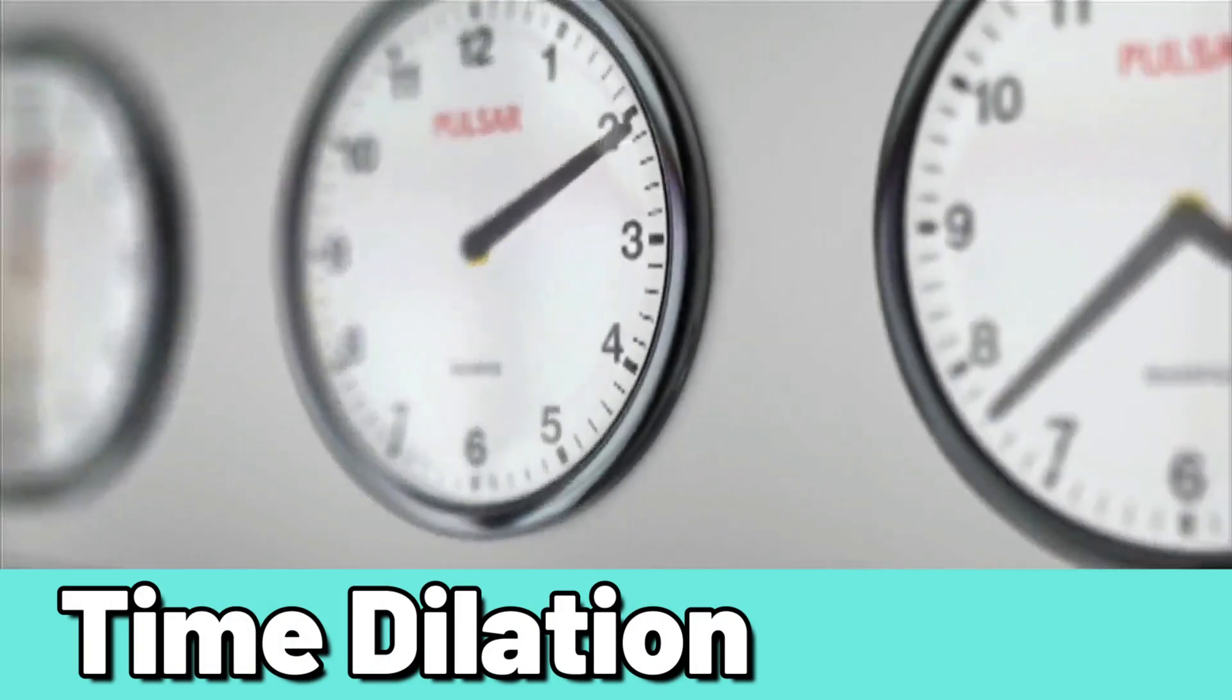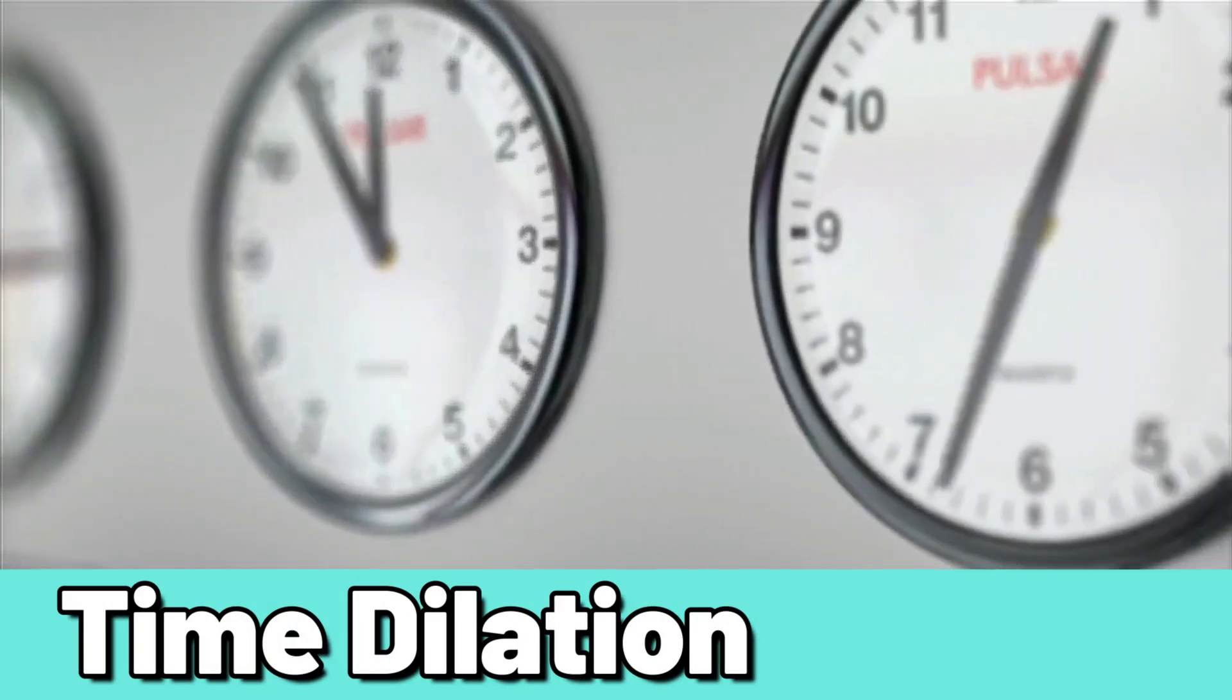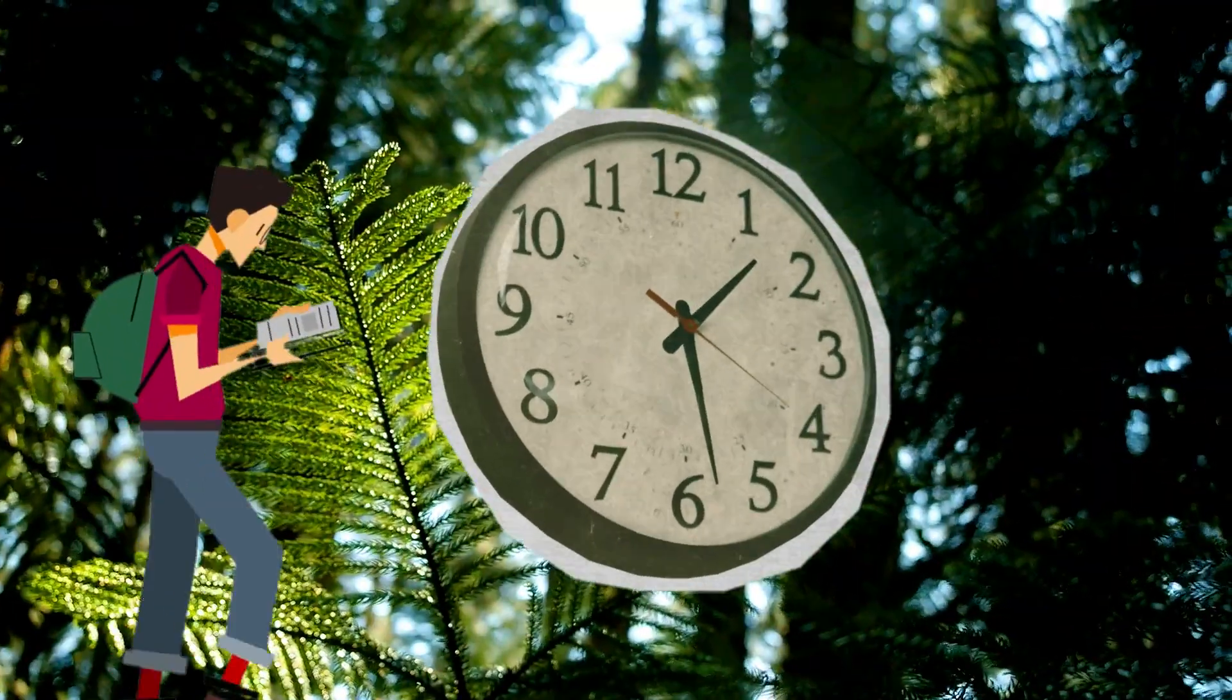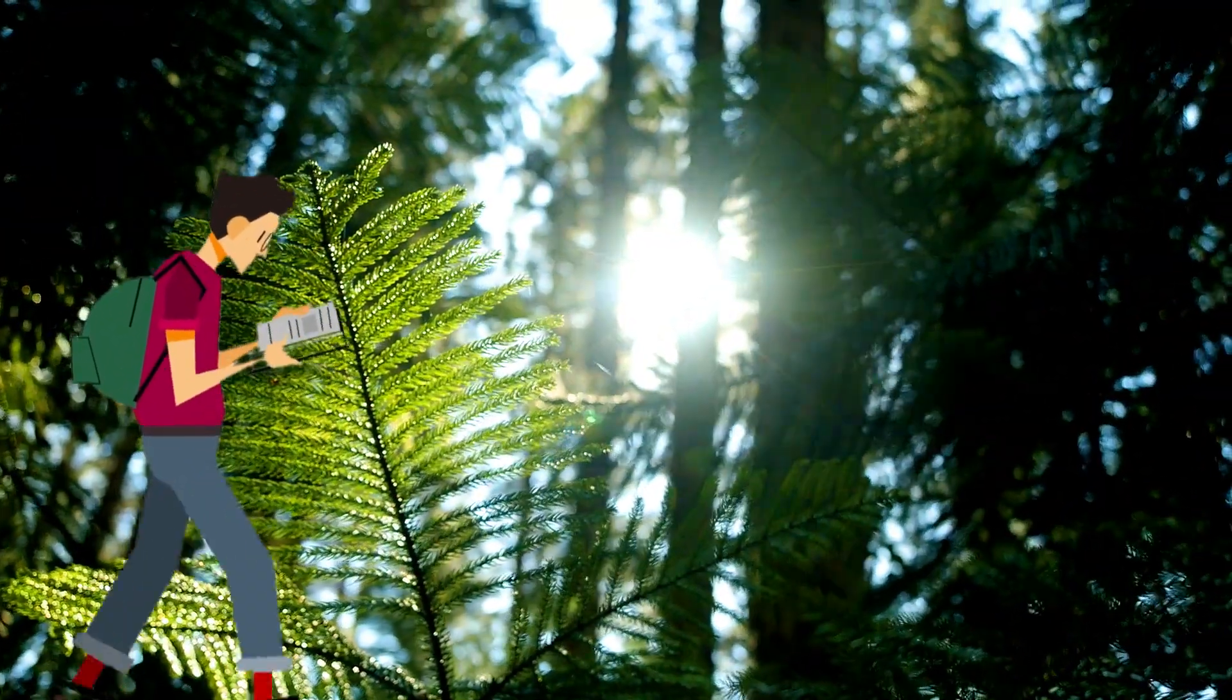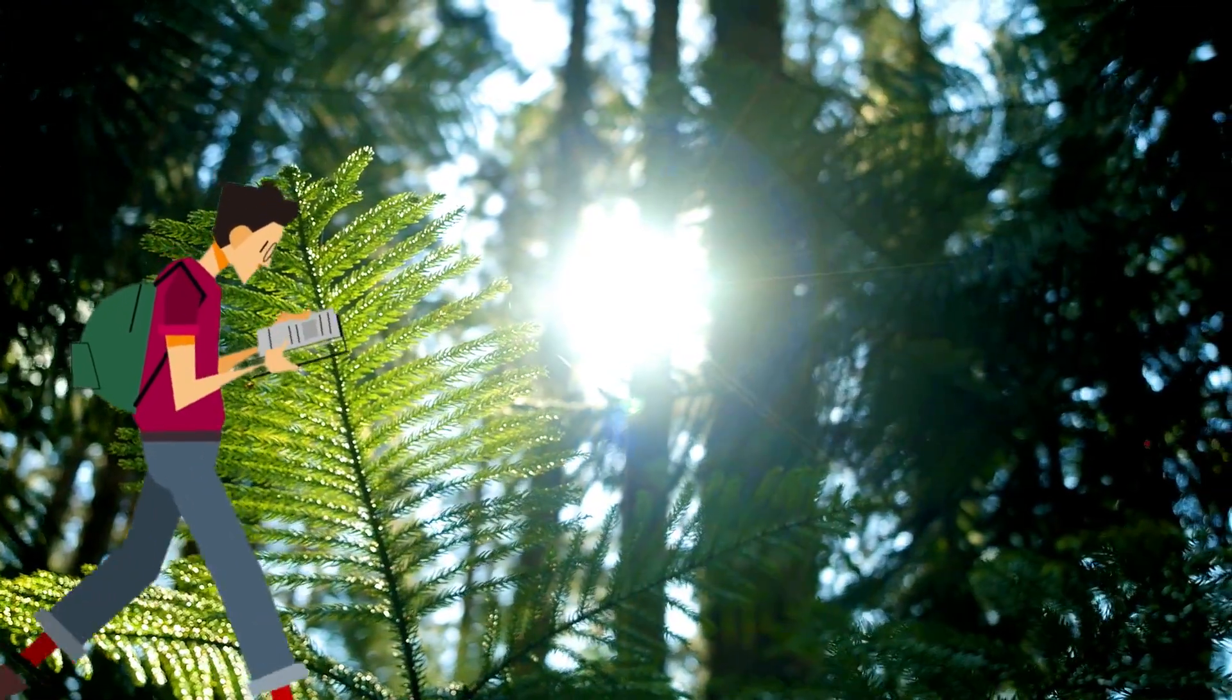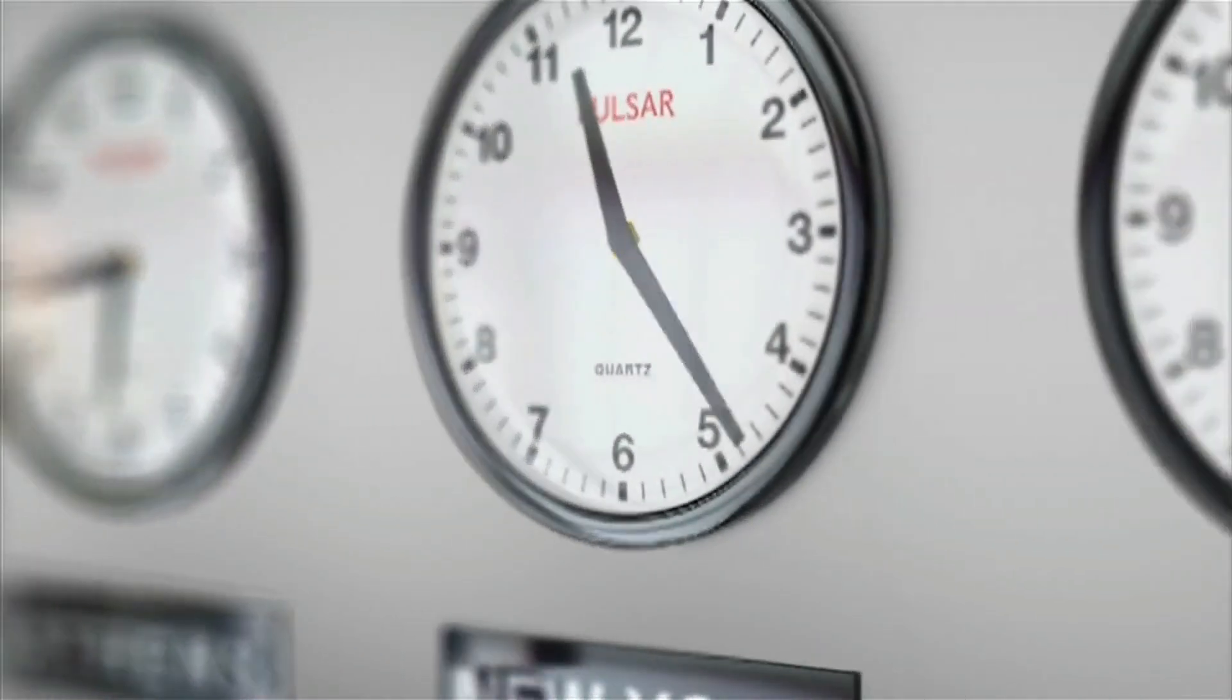Time dilation could be used to build a time machine. If an object could be placed in a strong gravitational field or made to move at very high speeds, time would pass more slowly for that object than for observers outside the field or not moving at high speeds. There is a lot of evidence supporting the idea of time dilation.